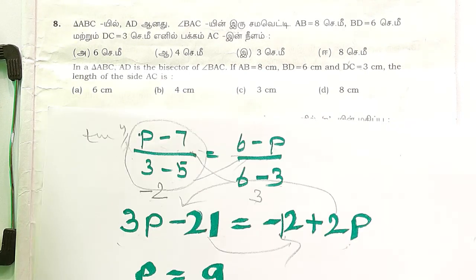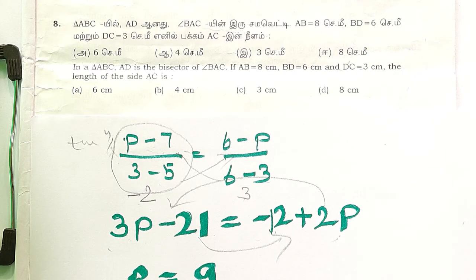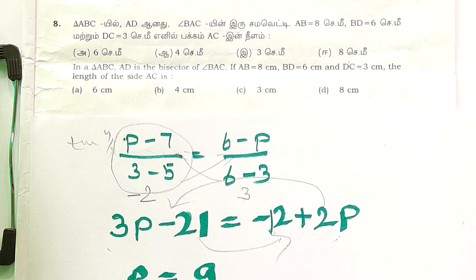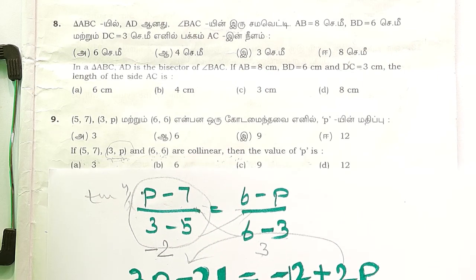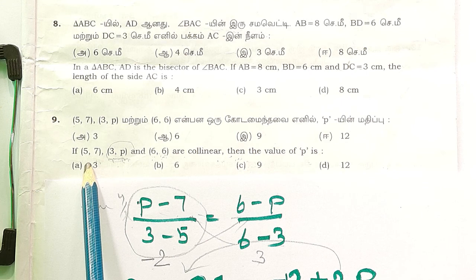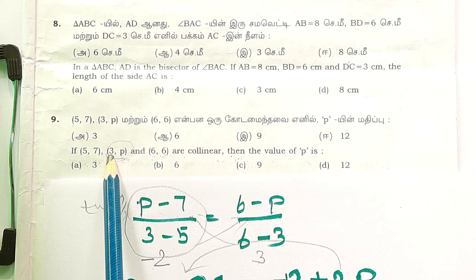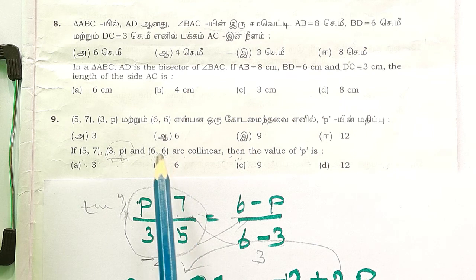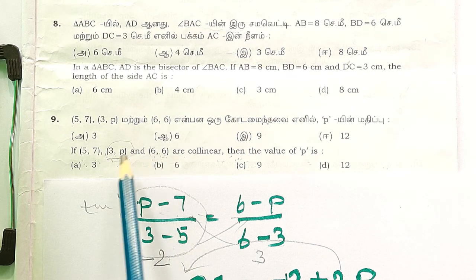that at once. Without any details: p minus 7 by 3 minus 5, here p minus 7, 3 minus 5, then x3 minus